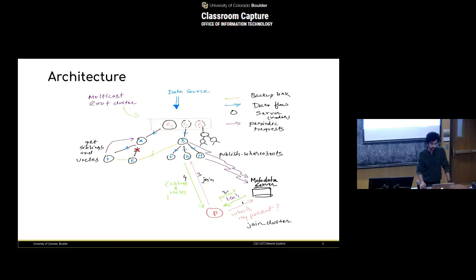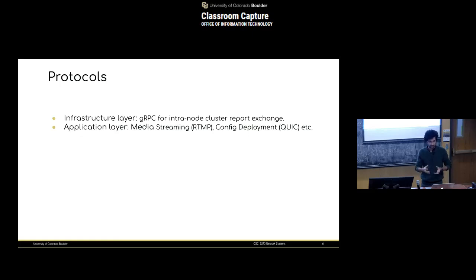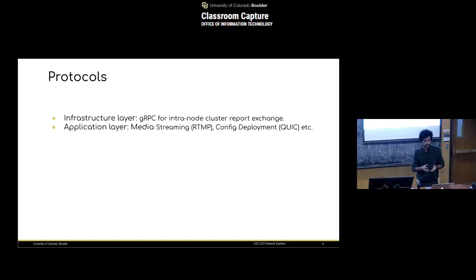The node then starts receiving updates from the parent. In case of failure, it can use the cluster state it has — siblings and uncles — to do a failover switch. For example, if the parent of node E dies, E could go to node B. There are priorities defined: one obvious priority is that if an uncle is free, the node should go to the uncle, because then you are not adding more height to the tree.